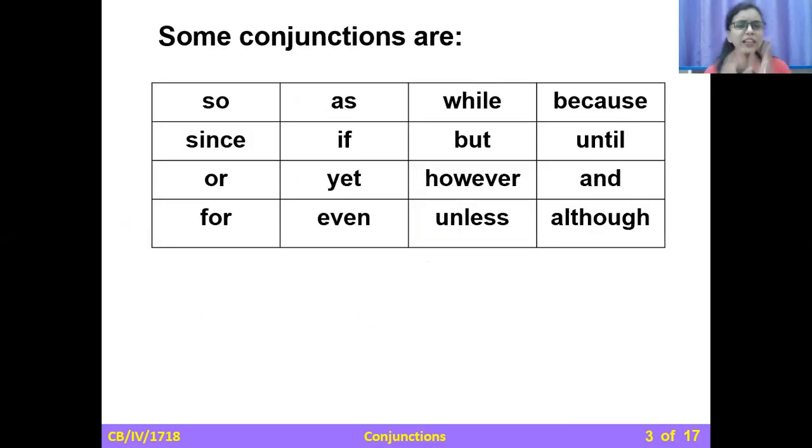Now, here are some words which are conjunctions: as, while, because, since, if, but, until, or, yet, however, and, for, even, unless, although. All these are conjunctions used for different reasons. They have different functions.